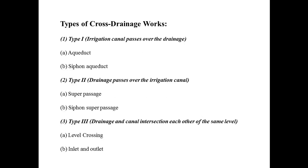Next are the types of cross drainage works. According to the condition, there are three different types. The first type is when the irrigation canal passes over the natural drainages. In this type, we have two types of cross drainage works: number one is the aqueduct, and number two is the siphon aqueduct. These two structures are constructed when the irrigation canal passes over the natural drainages.